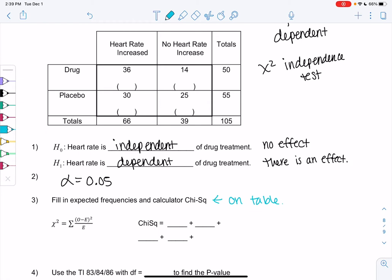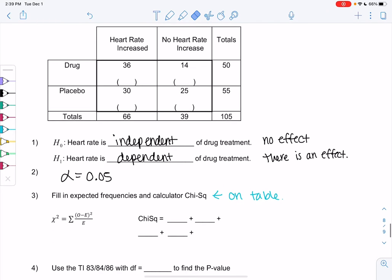So let's find those expected values. We're going to do row times column all over total. So my first one will be 50 times 66 over 105. My second one will then be, I'm going to go to the right. So right here, we'll do 50 times 39 over 105.